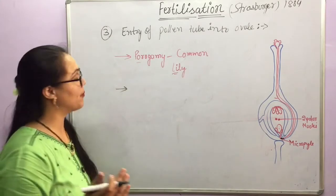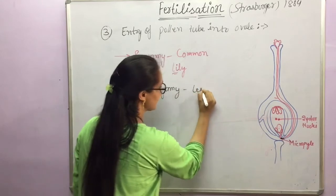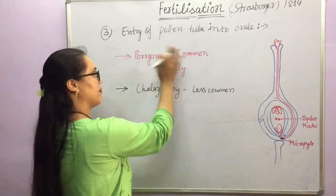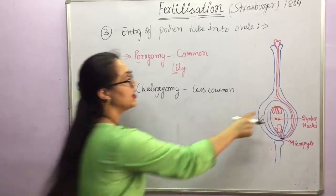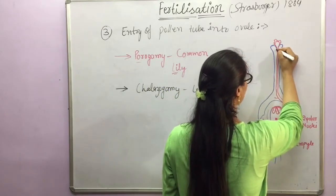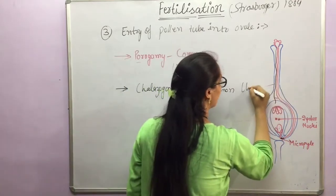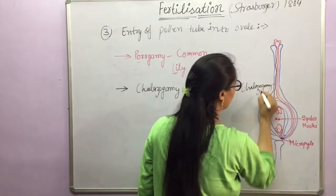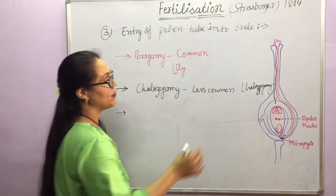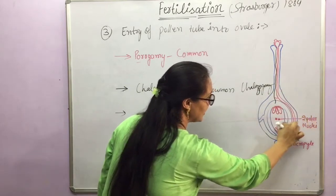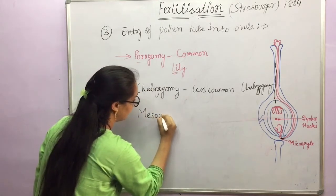The second method, which is less common, is chalazogamy. In chalazogamy, the pollen tube enters into the ovule through the chalazal end. The third method — sometimes the pollen tube enters by piercing through the integuments from any lateral side and releases the male gametes inside; this is called mesogamy.